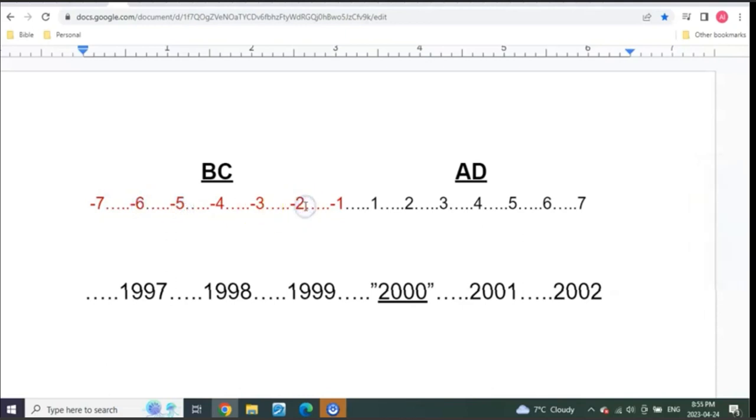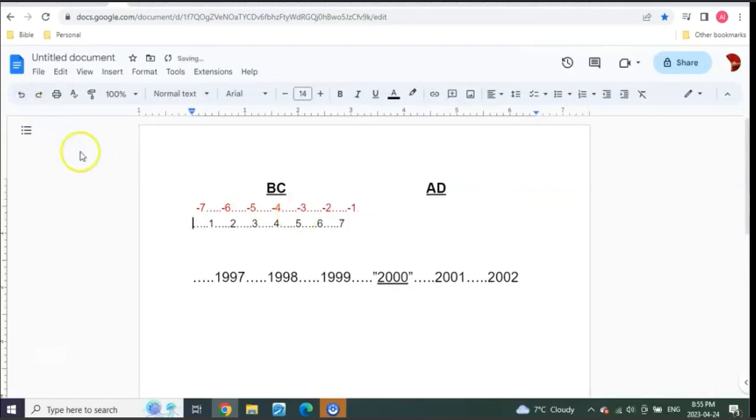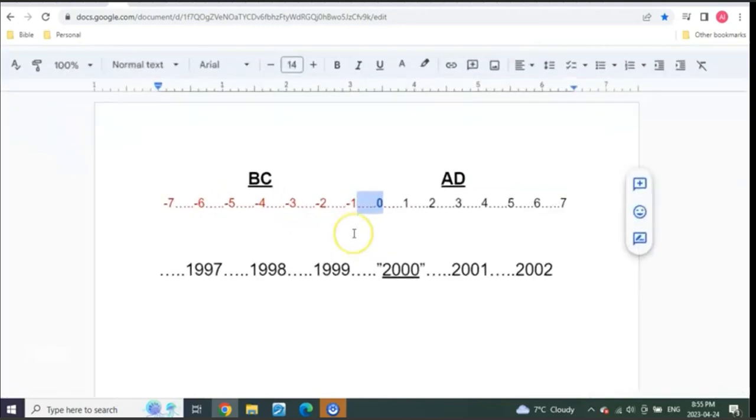...to one BC. One BC starts here and ends here, which of course would then say, see, one AD starts here and ends here. But that's not true. This is absolutely completely wrong. And why is it wrong? Because...